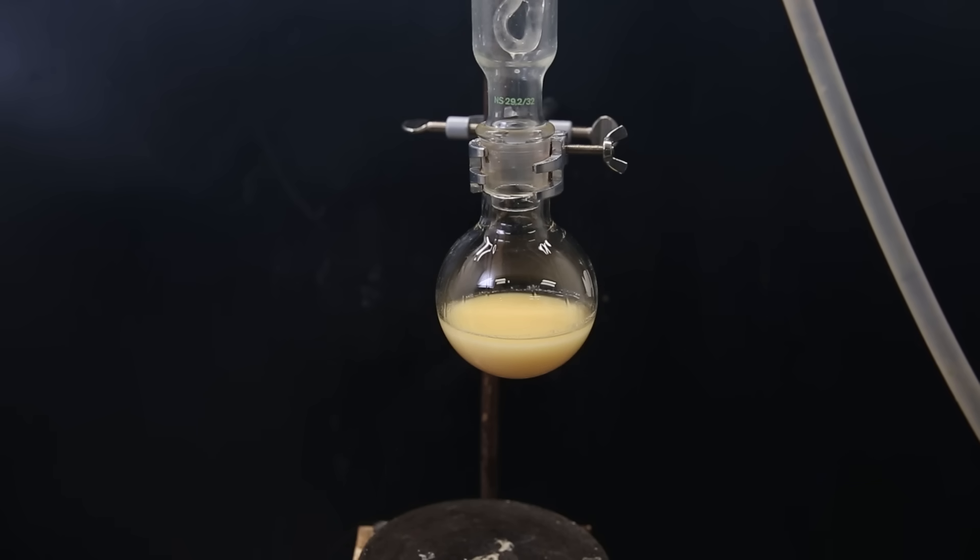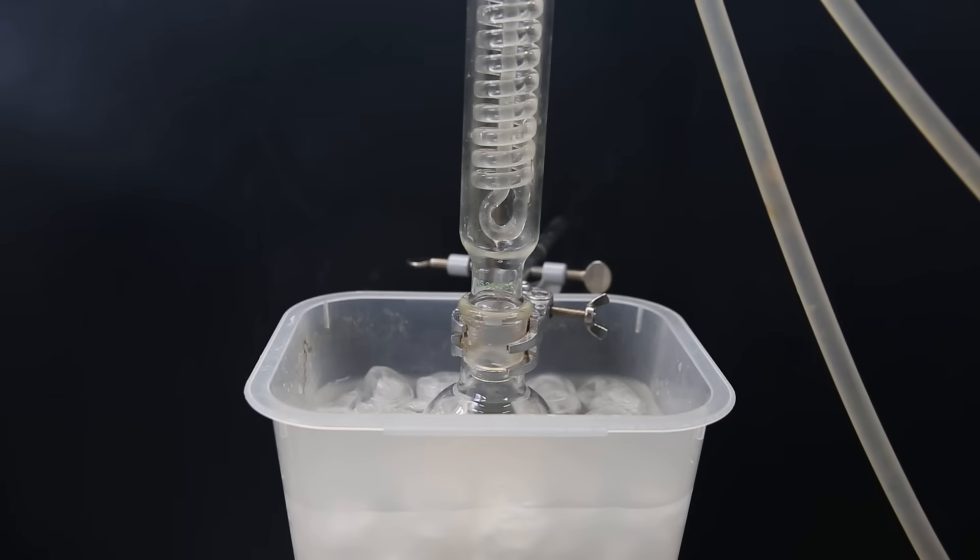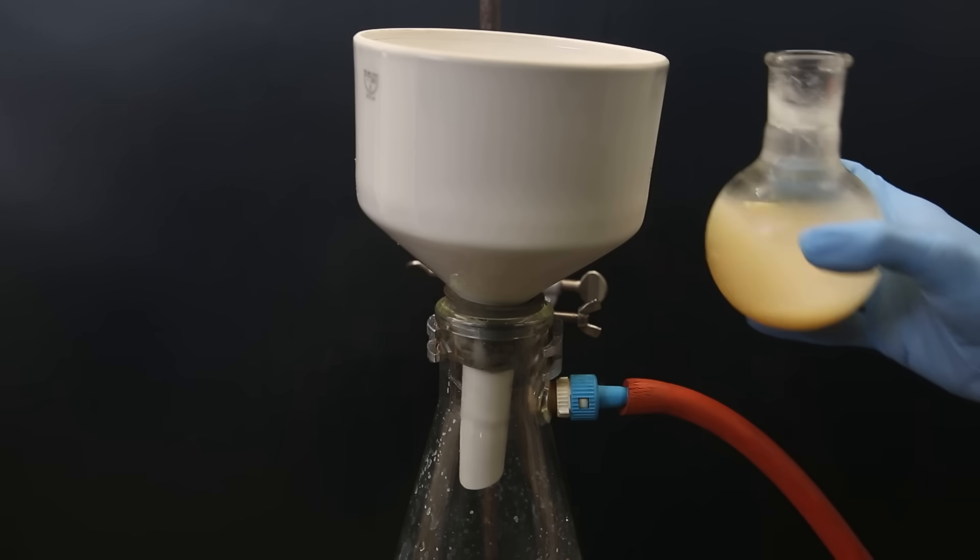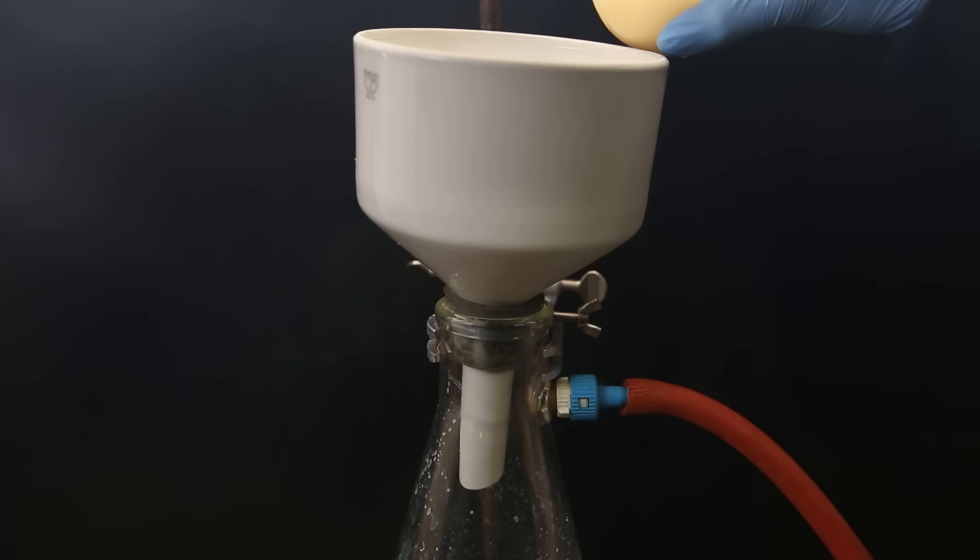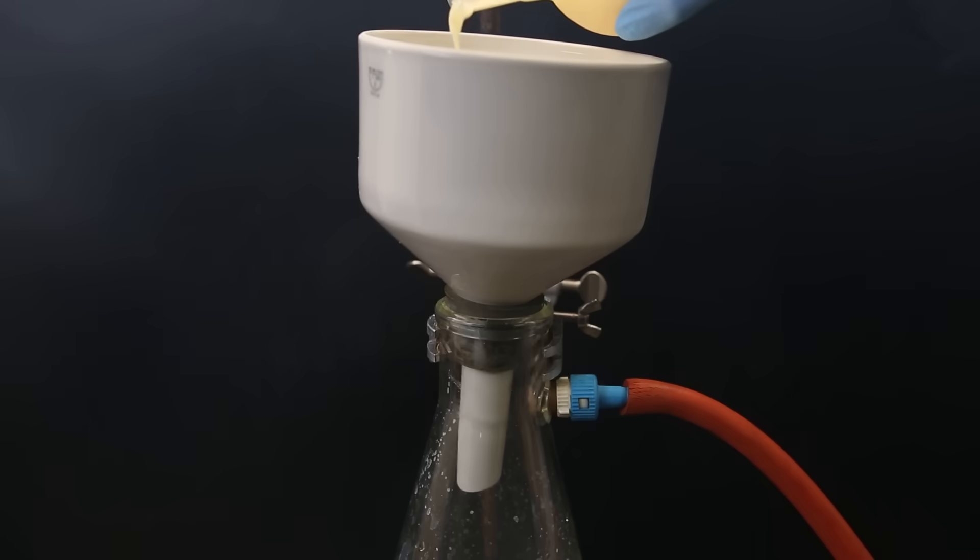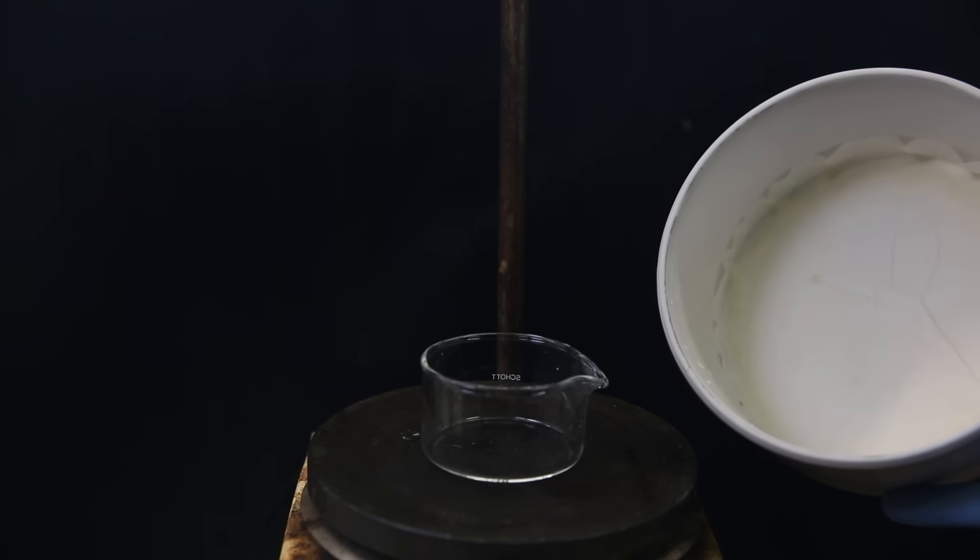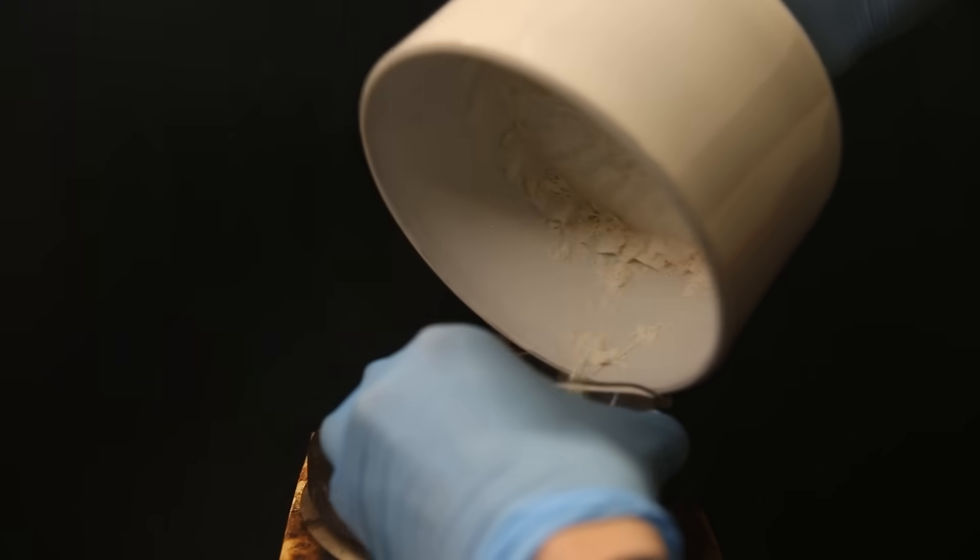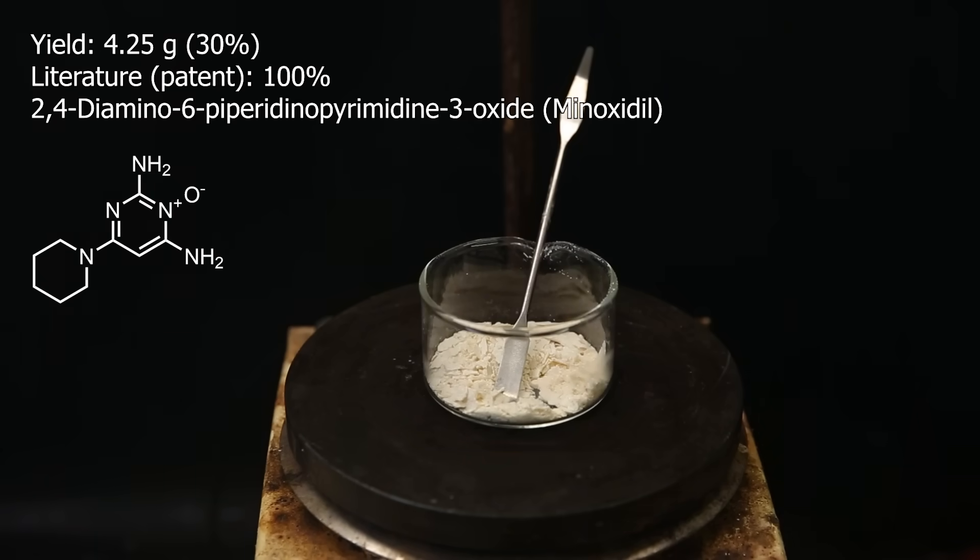When I return it looks pretty much the same and I set it in an ice water bath to cool it down. I then filter all of it with vacuum filtration to collect the precipitated minoxidil and I washed it once with some piperidine. After letting it dry on the filter with vacuum for a good while I move it to a dish. And the yield of not yet pure minoxidil turned out to be 4.25 grams, or 30%. This is notably different from the 100% yield in the patent, but usually they lie in patents.